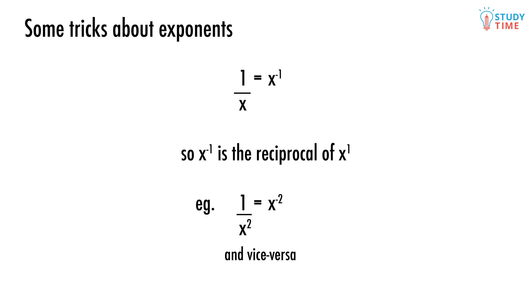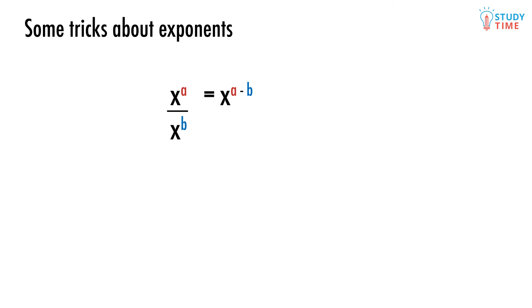And so lastly, x to the power of a divided by x to the power of b equals x to the power of a minus b. It's just the opposite of multiplying x's.